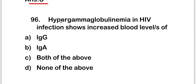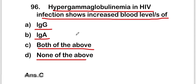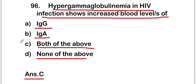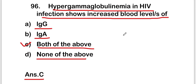The next question is: hypergammaglobulinemia in HIV infection shows increased blood levels of IgG, IgA, both of the above, or none of the above? The right answer is option C — both of the above. Hypergammaglobulinemia in HIV infection shows increased blood levels of both IgG and IgA.